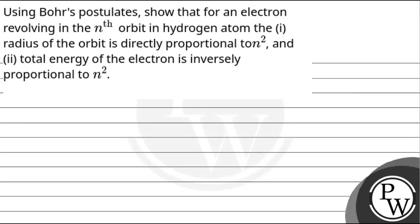Hello, let's read this question. The question says: using both postulates, show that for an electron revolving in the nth orbit in a hydrogen atom, the radius of the orbit is directly proportional to n square, and the total energy of the electron is inversely proportional to n square. So here we have a key concept.